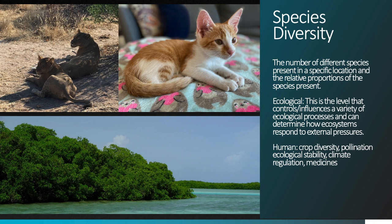In human systems, crop diversity is one of the key places where species really matter, because different species of crops have different properties that allow them to grow in different conditions, which also determines their nutritional value for human populations. Other examples include pollination, which is influenced by the species present in a setting, and ecological stability in the face of disturbances like fire. Species diversity also influences how ecosystems regulate climate and plays a role in the discovery of new medicines that might benefit society.